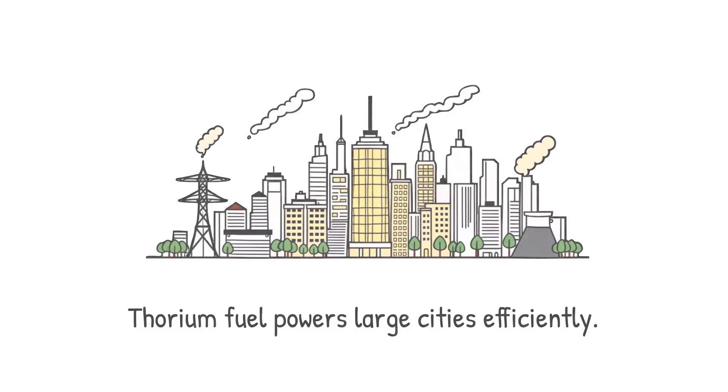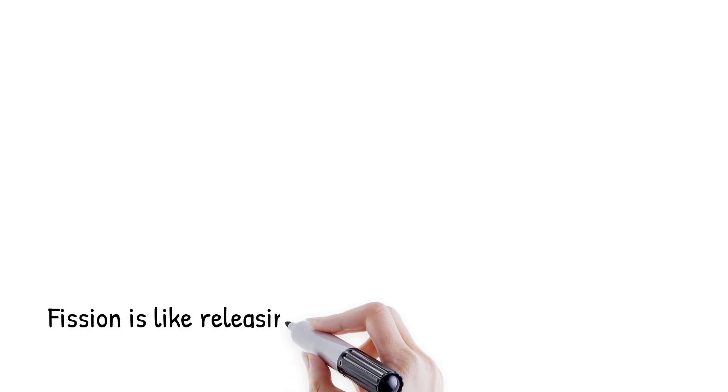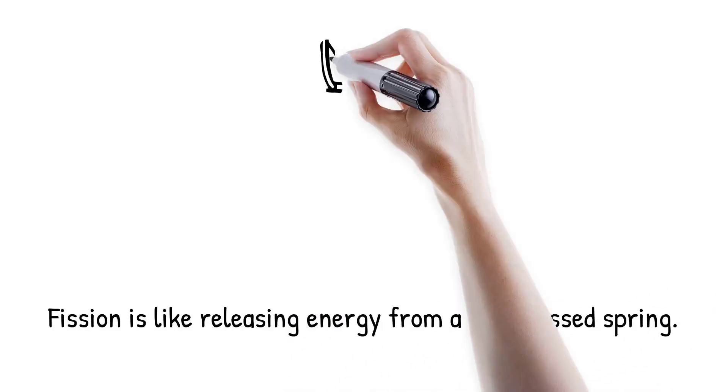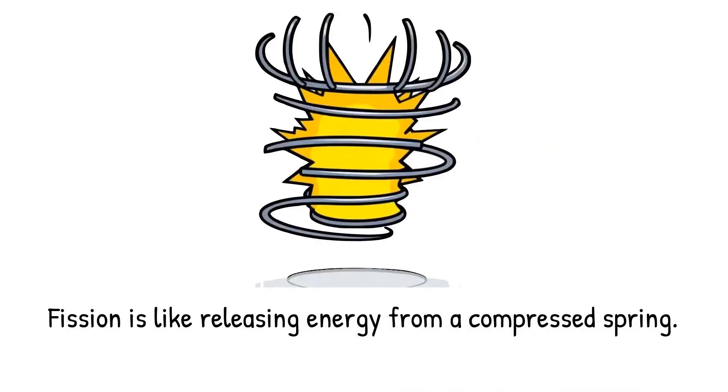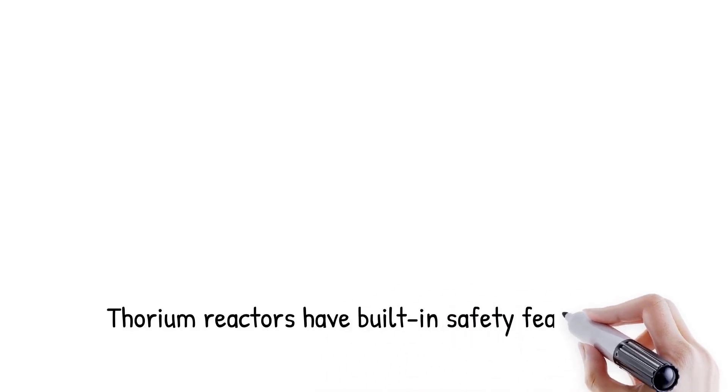For example, one ton of thorium could theoretically provide as much energy as 200 tons of uranium or 3.5 million tons of coal. Analogy: fission is like snapping open a compressed spring. The tiny structure holds immense energy that bursts out when released.